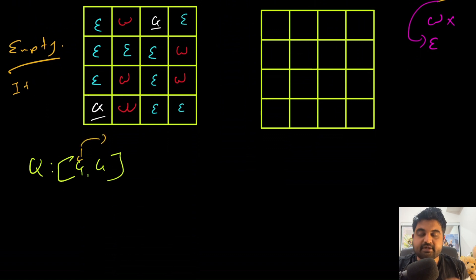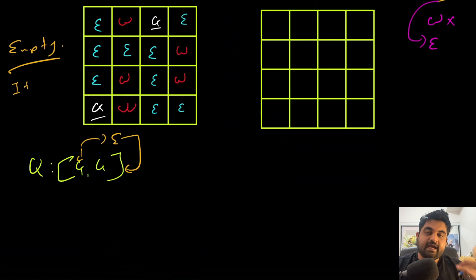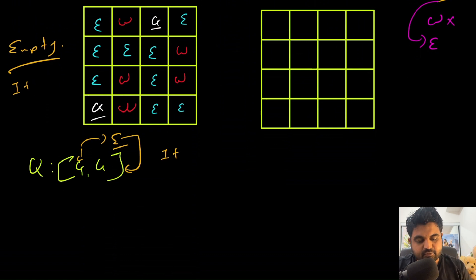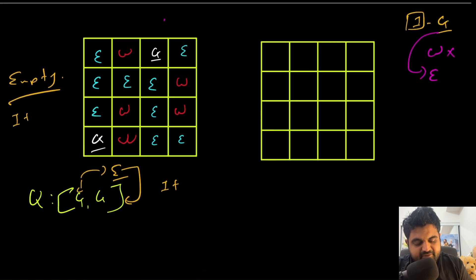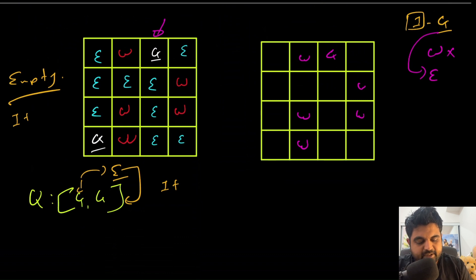From each gate value in the queue, we keep iterating over neighbors. All empty rooms reachable from a gate get marked with the current distance plus one. Each subsequent BFS level adds one more to the distance. Let's say we start from one gate — the immediate neighbors get distance one, and we build outward from there.